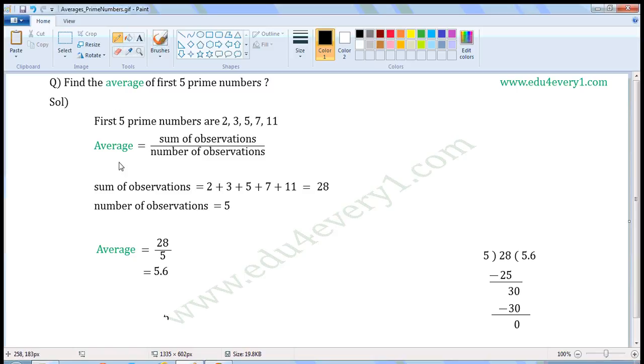We can find the average using the formula. Average is equal to sum of observations by number of observations.